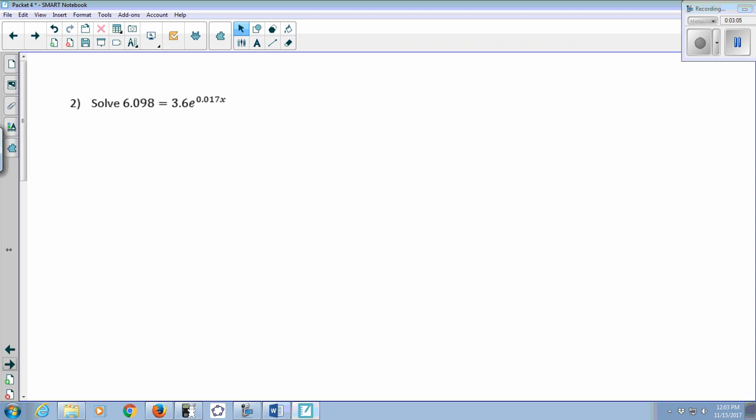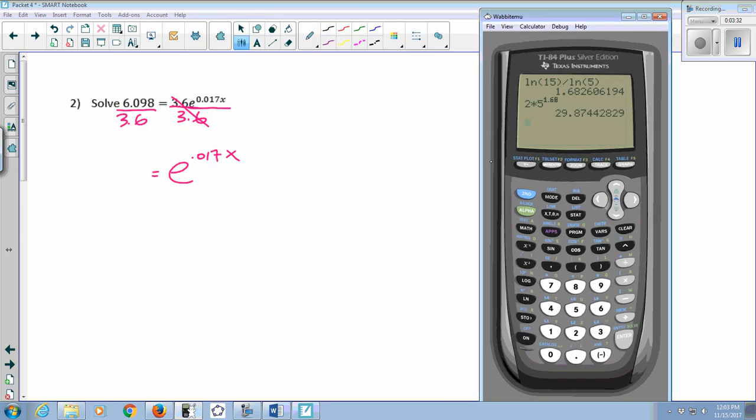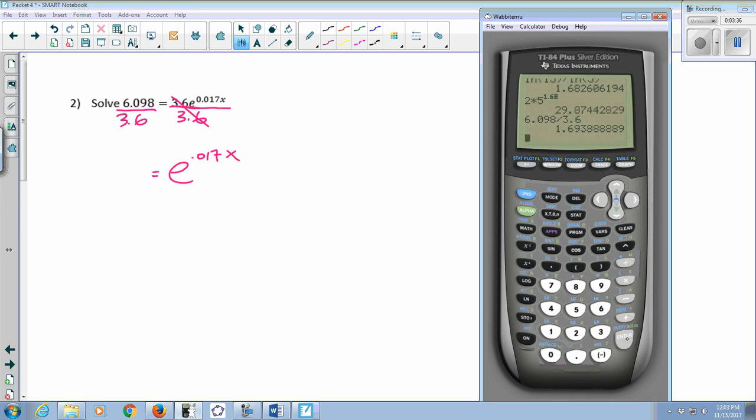A few more practice problems before we do the activities. I want to solve 6.098 equals 3.6 e to the 0.017x. So first we want to isolate the e to the sum stuff. So I'm going to divide both sides by 3.6. Those cancel over here, so I have e to the 0.017x equals 6.098 divided by 3.6 is 1.694.